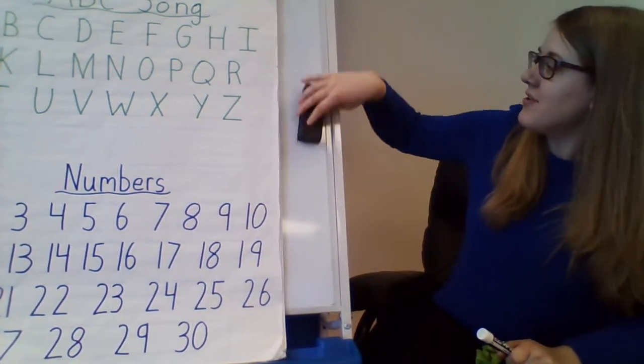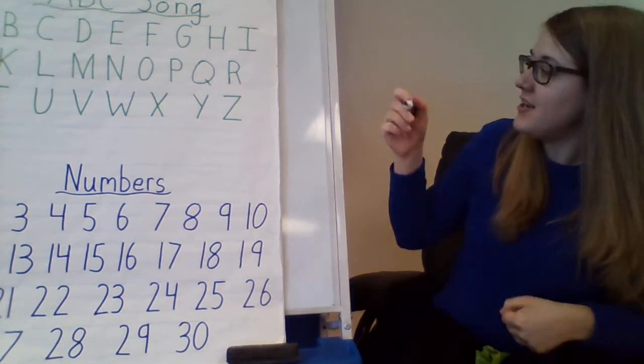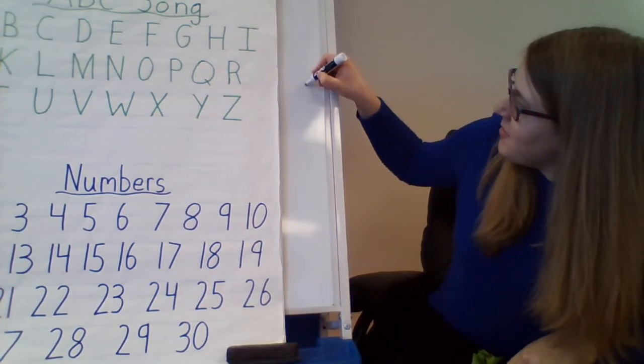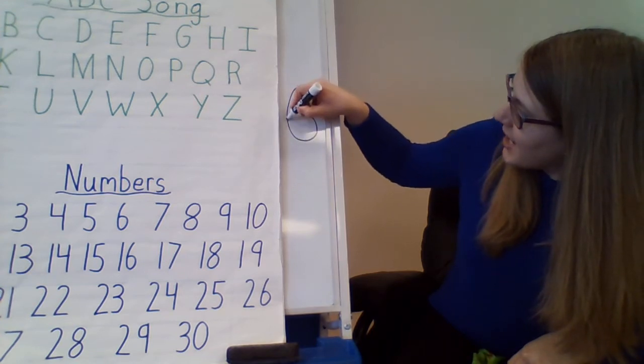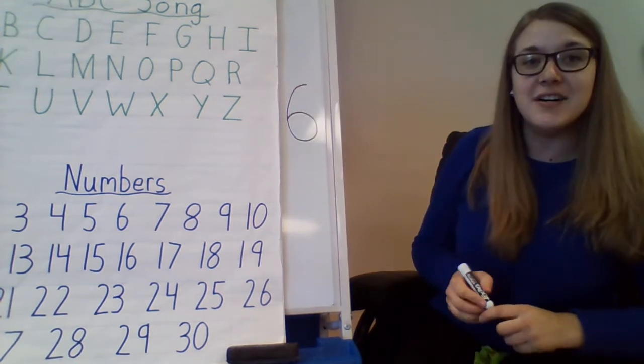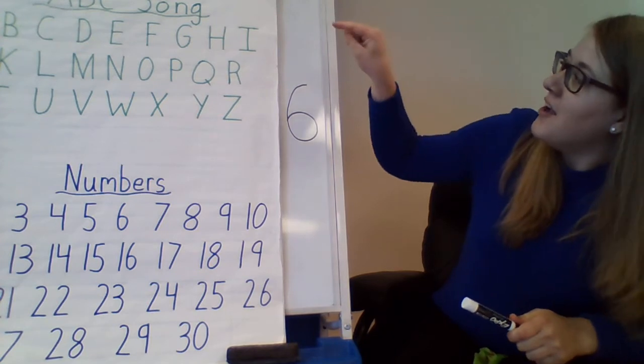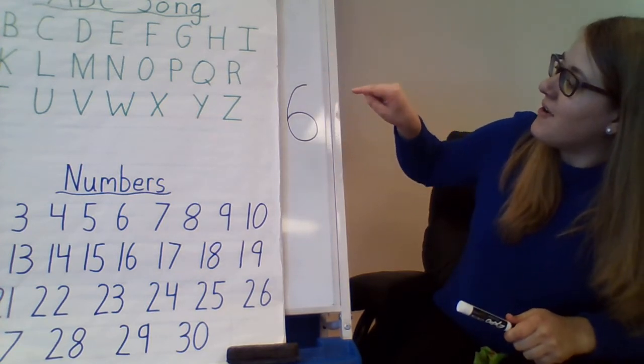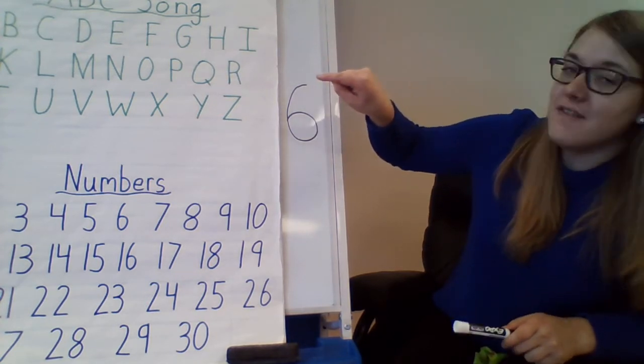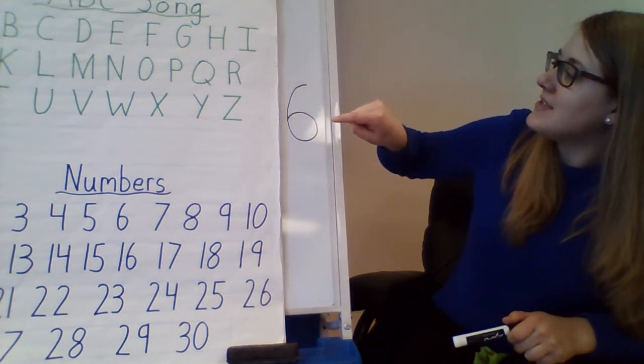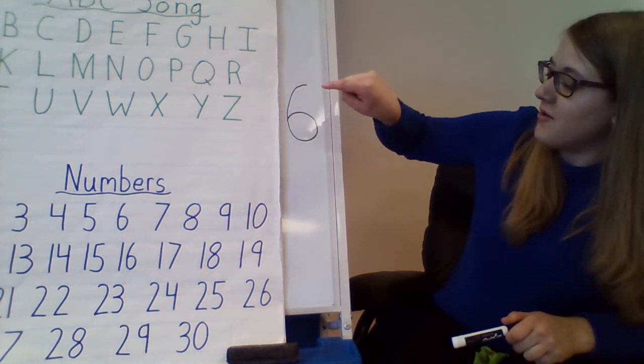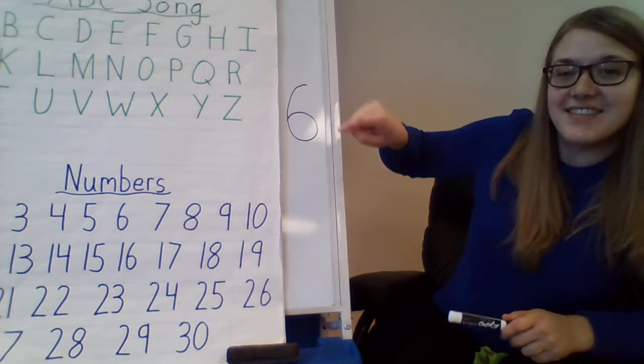Now we are going to do the number 6. You start at the top. Make a C then around you go. Now you have made a 6 you know. Say it with me. Make a C then around you go. Now you have made a 6 you know.